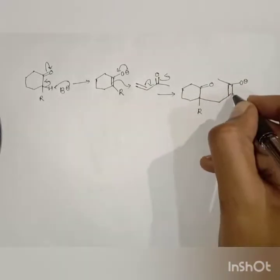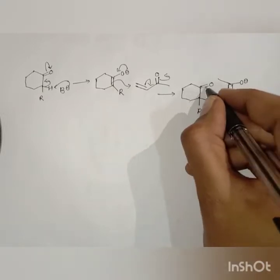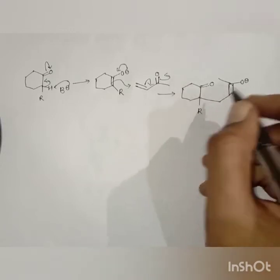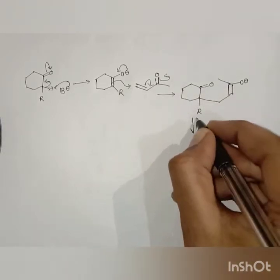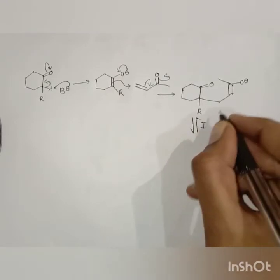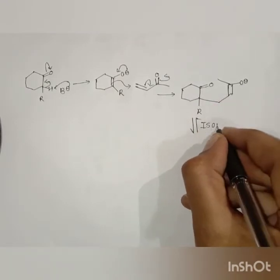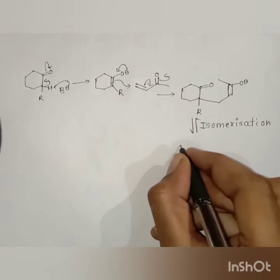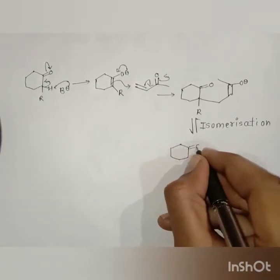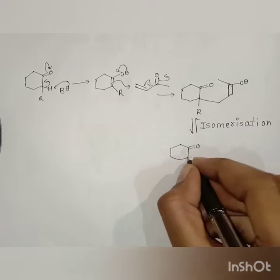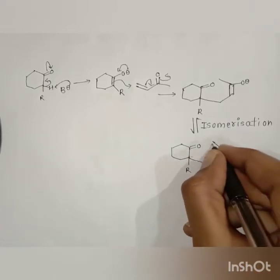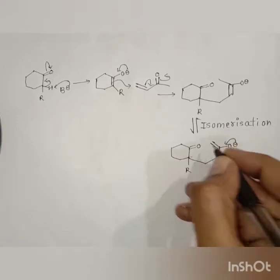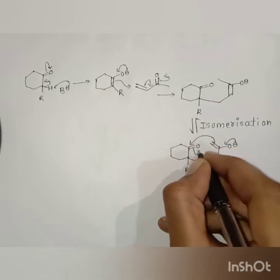If this enolate attacks on the carbonyl group through this carbon, it leads to the formation of a four-membered ring, which is not stable. Therefore, this enolate undergoes isomerization, and we get a new enolate. This enolate then attacks on this carbonyl group.